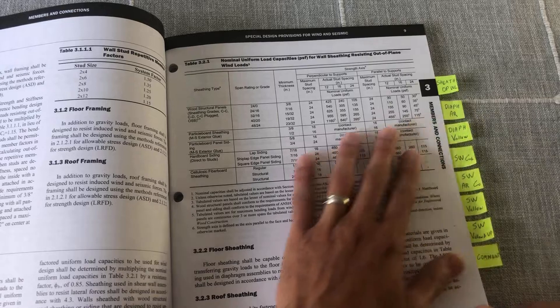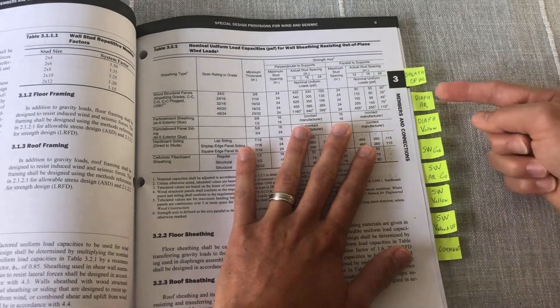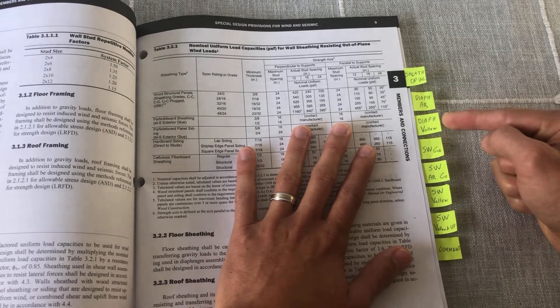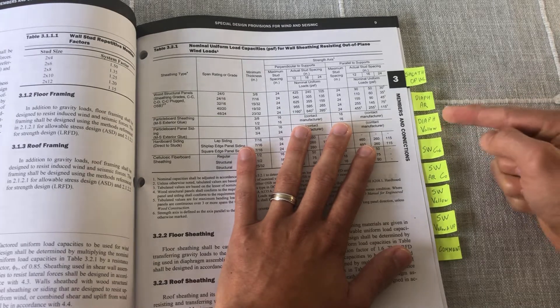Moving on to diaphragms, we have two tabs here. The first one is for the aspect ratio, and the second one is for the actual shear capacity of our diaphragm.